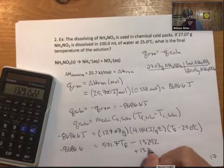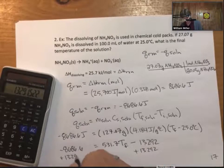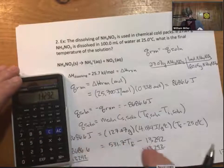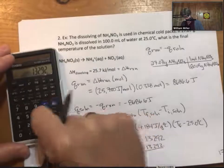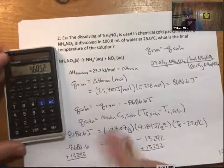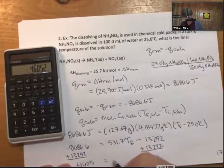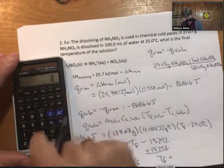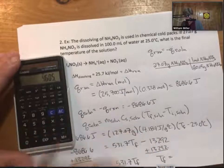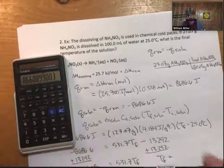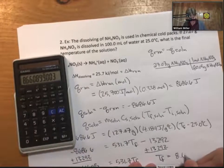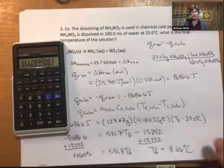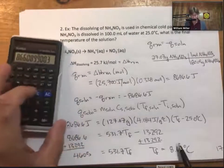Getting rid of my units for a second, then add this to the other side. I get 13,292 minus 8686.8 equals 4605, which equals 531.7 tf. Divide through both sides by 531.7, and I get 8.66 degrees celsius as my final temperature. That is a good temperature - it is lower than the initial temperature.